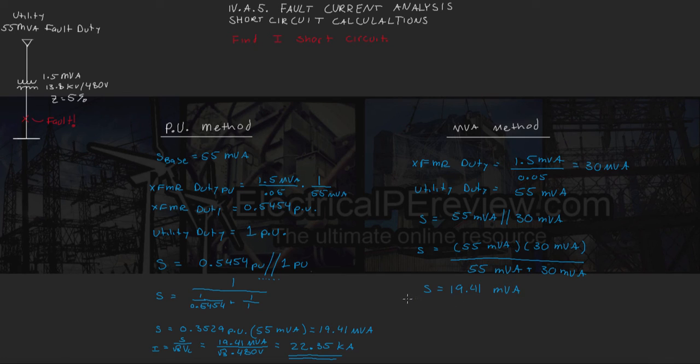And then to find the actual current flowing through the fault in this direction right here, we do the same like we did when we were using per unit. Since S equals VI, we can solve for I by dividing by V. So I is going to equal 19.41 MVA divided by square root 3 times our line voltage of 480V. And of course we get the same answer of 22,350 amps or 22.35 kA.